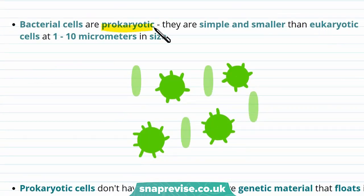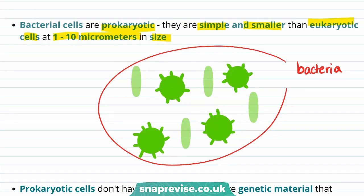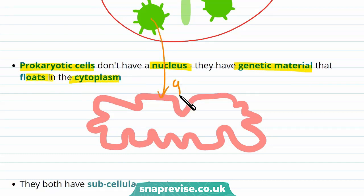Bacterial cells are prokaryotic. They're simple and smaller than eukaryotic cells, at 1 to 10 micrometers in size. These bacteria are only made up of one cell, and are relatively smaller than eukaryotic cells. Prokaryotic cells don't have a nucleus — they have genetic material that floats in the cytoplasm. This is the genetic material in prokaryotic cells.